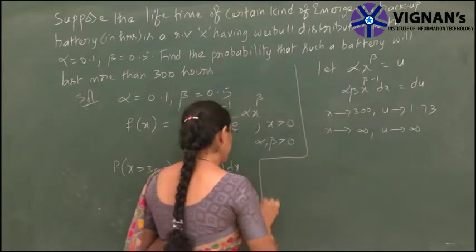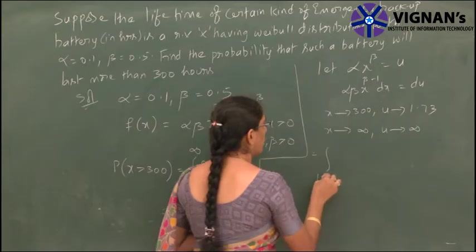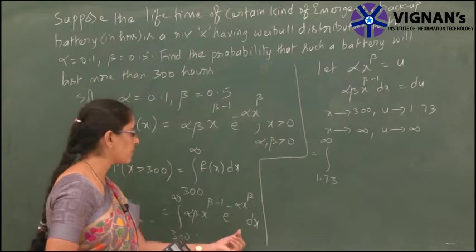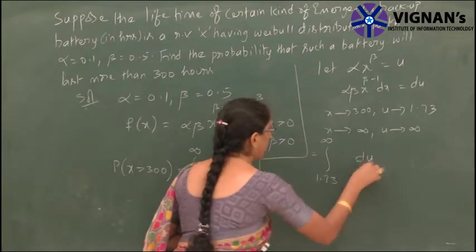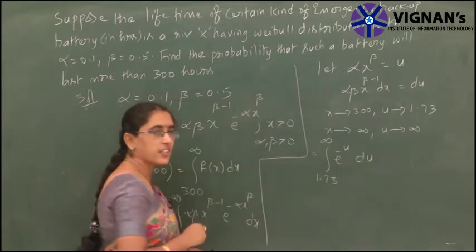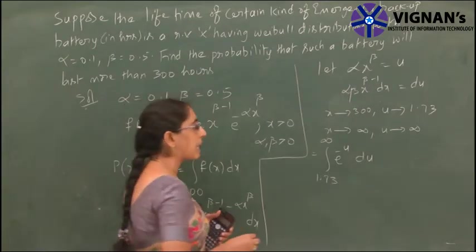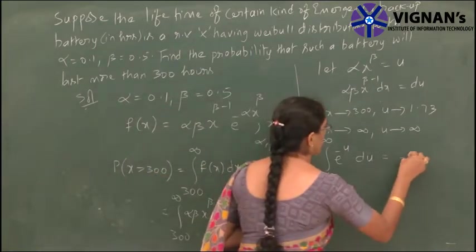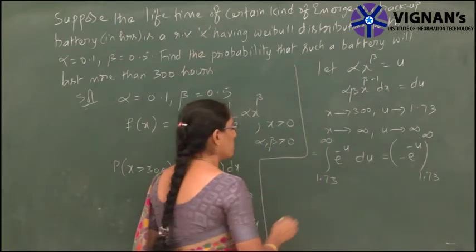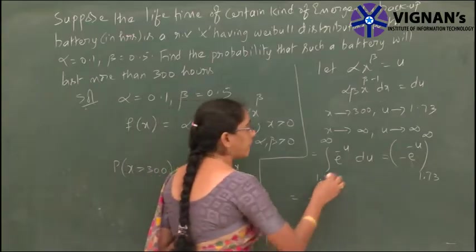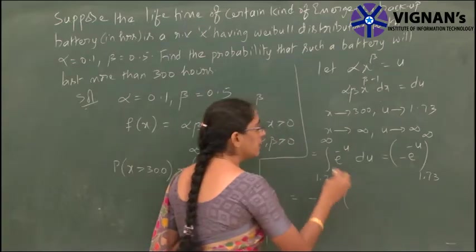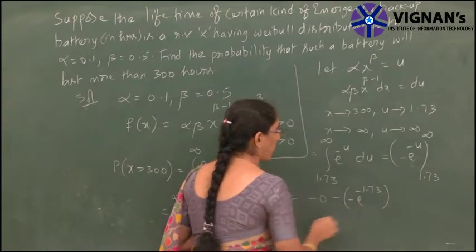This gives us the integral from 1.73 to infinity of e^(-u) du. We know that the integral of e^(-u) is minus e^(-u), evaluated from 1.73 to infinity. Substituting the upper limit, e^(-infinity) becomes 0. So we get minus of minus e^(-1.73).